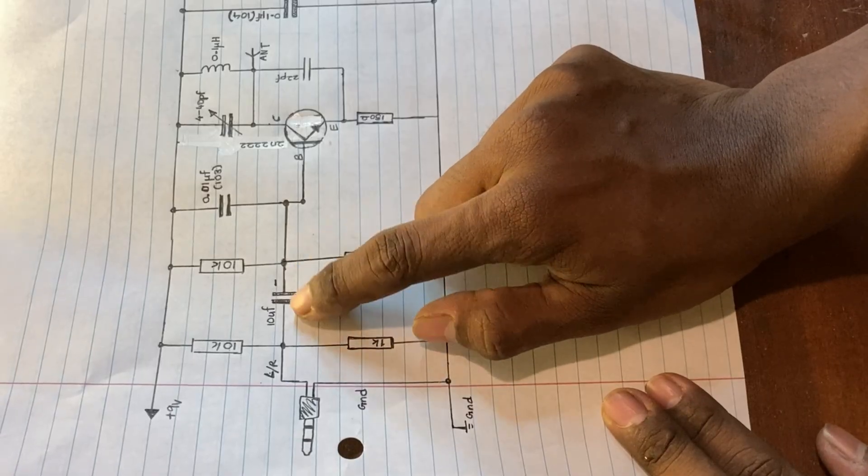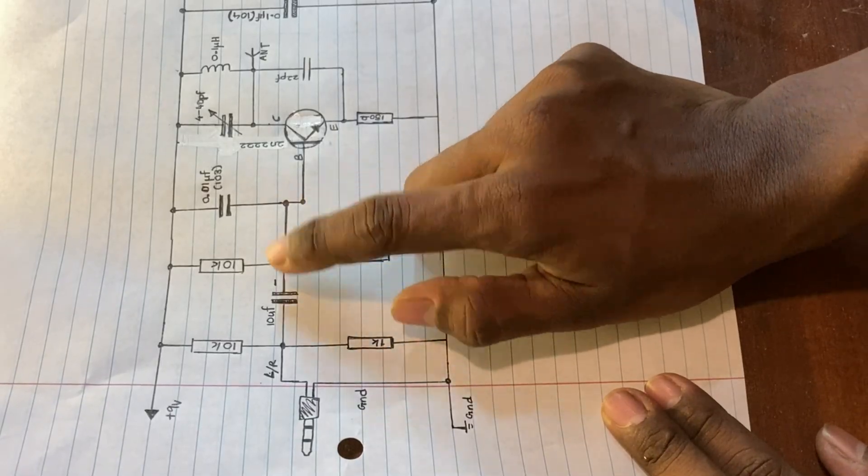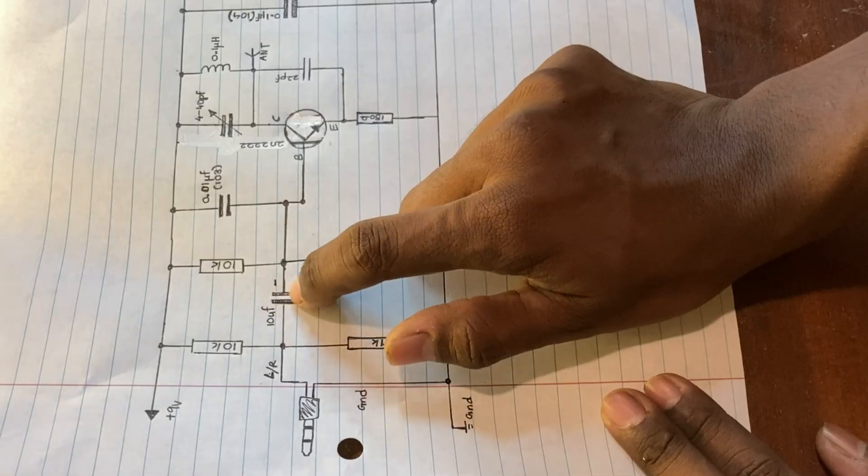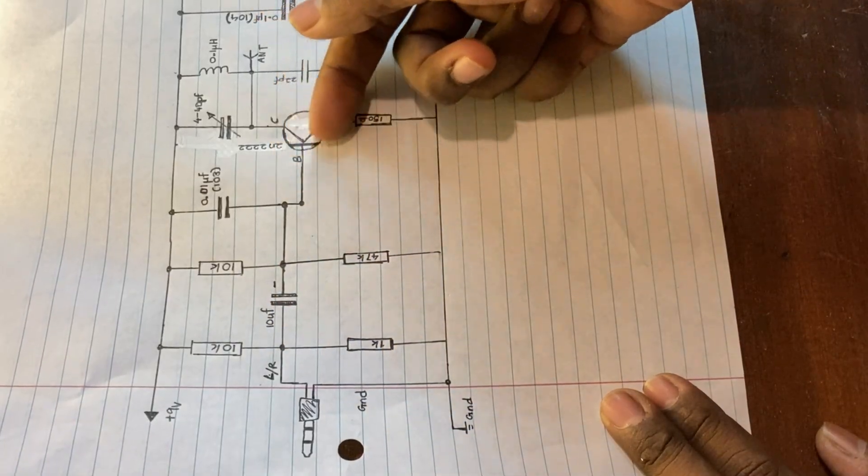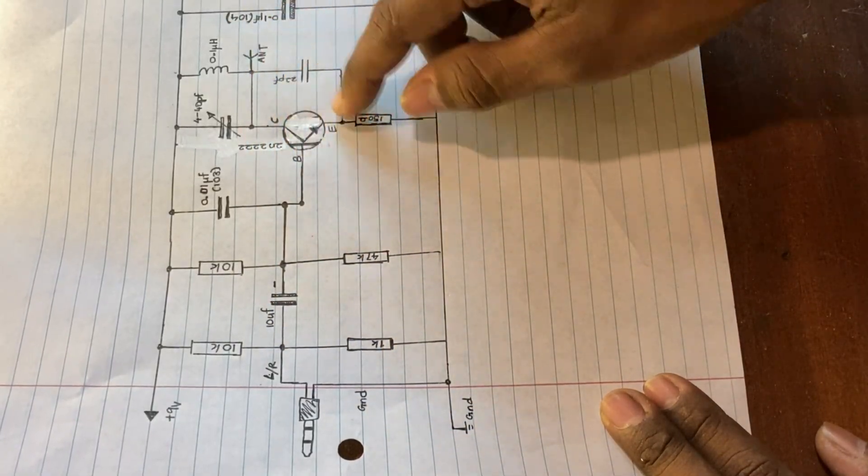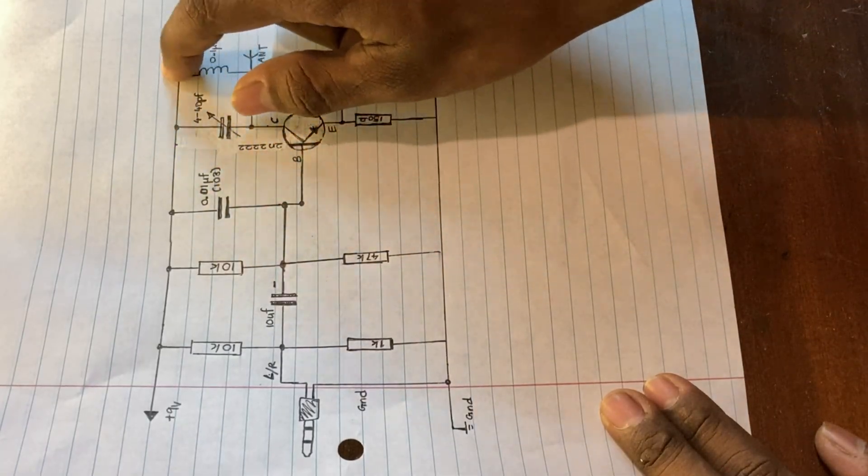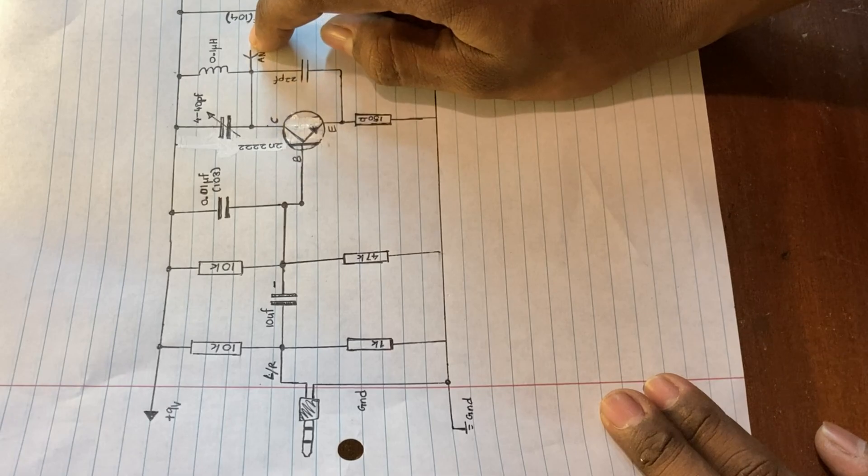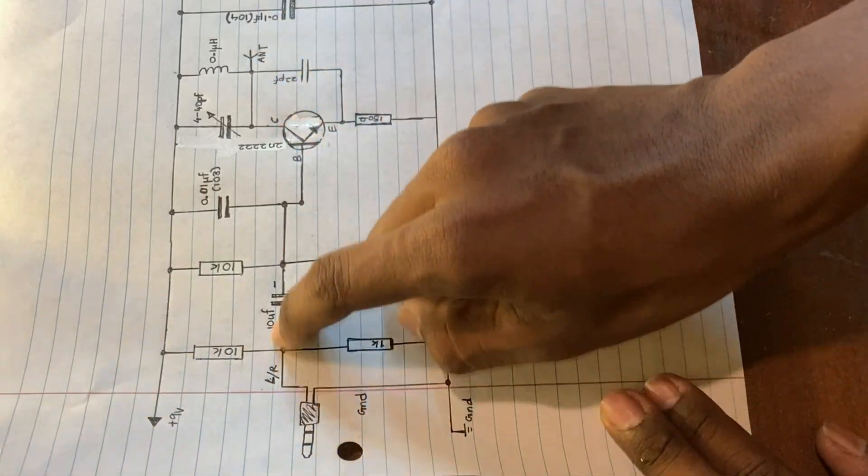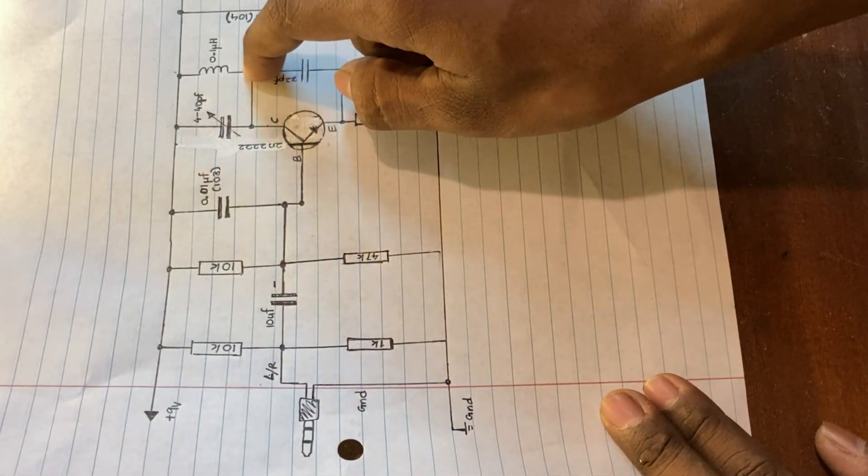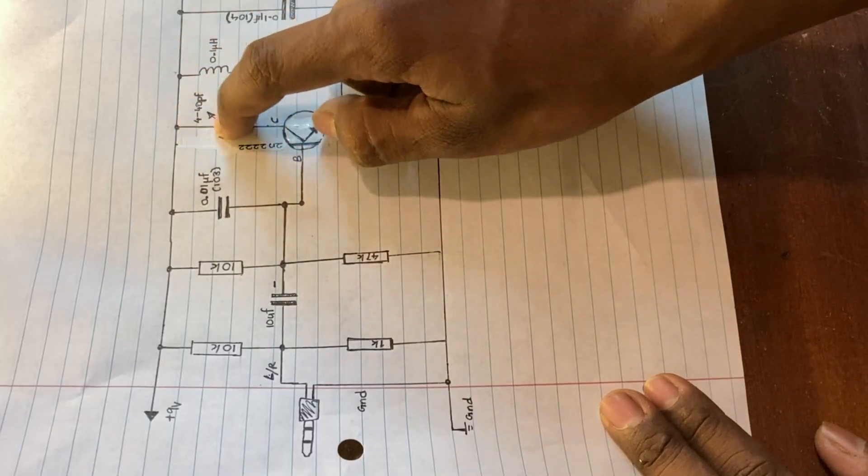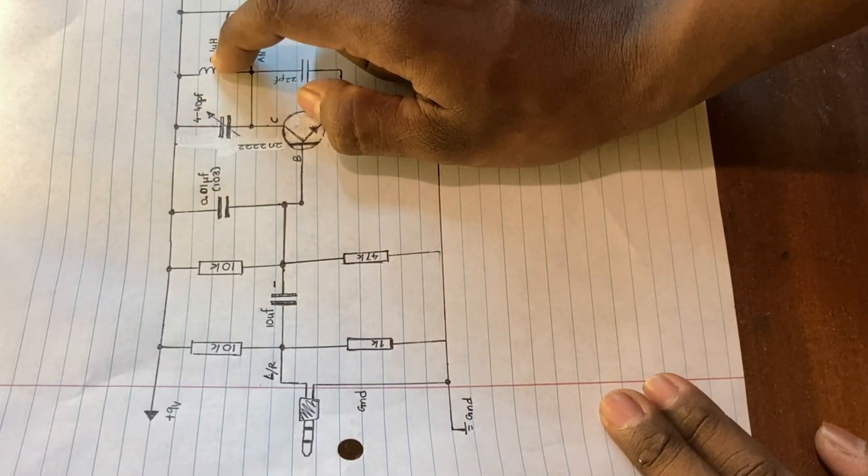And it will be received by the base, filtered by this 10 microfarad capacitor, and this will act as our amplifier. And this is the oscillator part and here is our antenna.